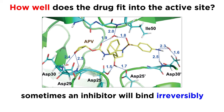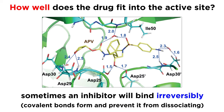Sometimes inhibitors will bind irreversibly, meaning that once they're in, they're stuck there, which is often the case if covalent bonds are formed between the drug and the protein, although covalent bonds are not necessarily required for binding to be irreversible.